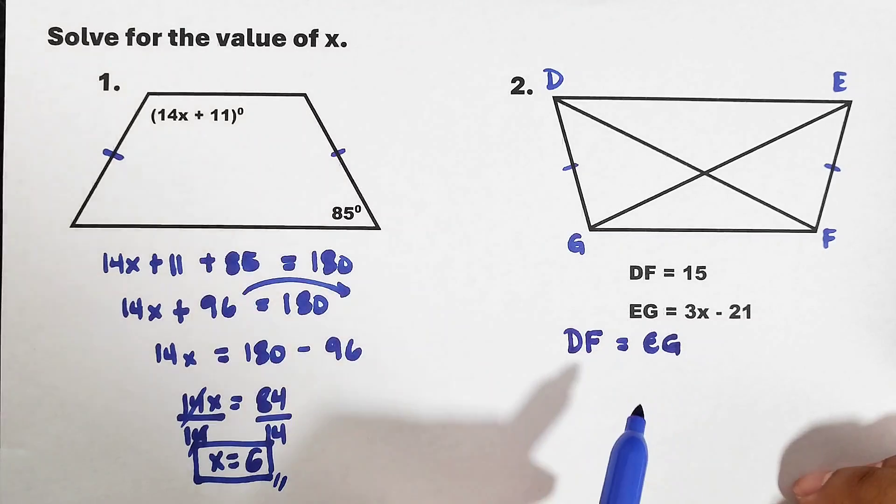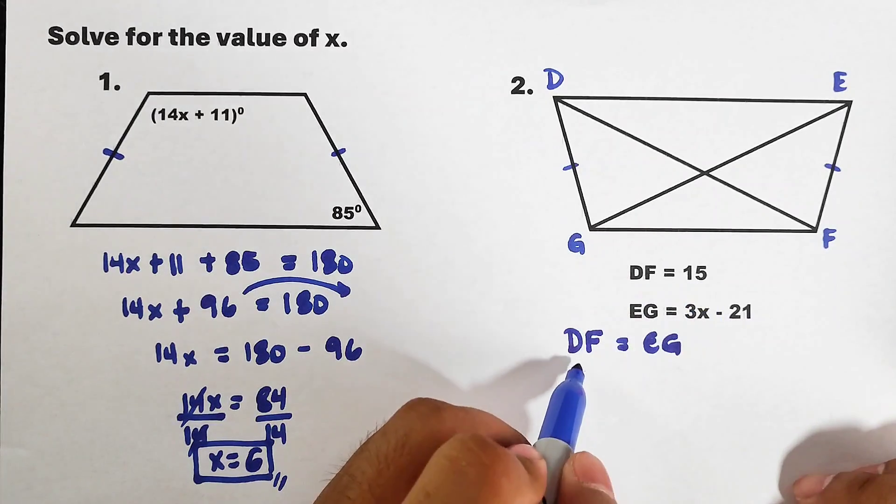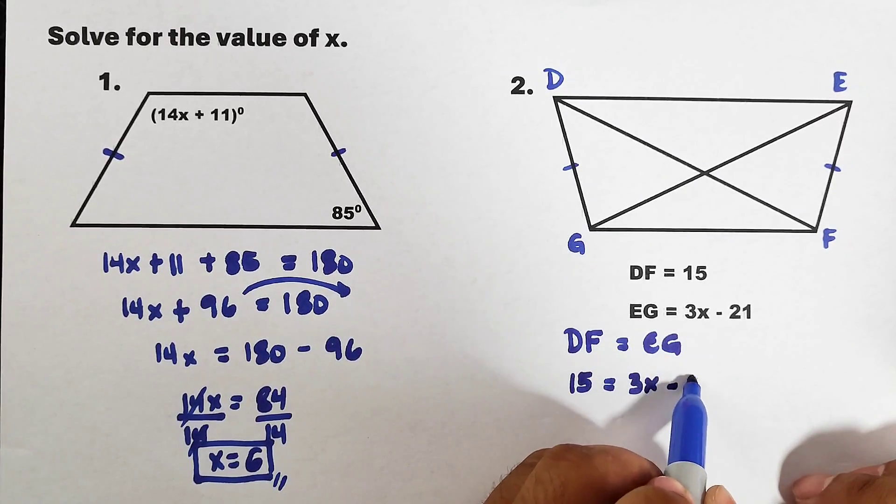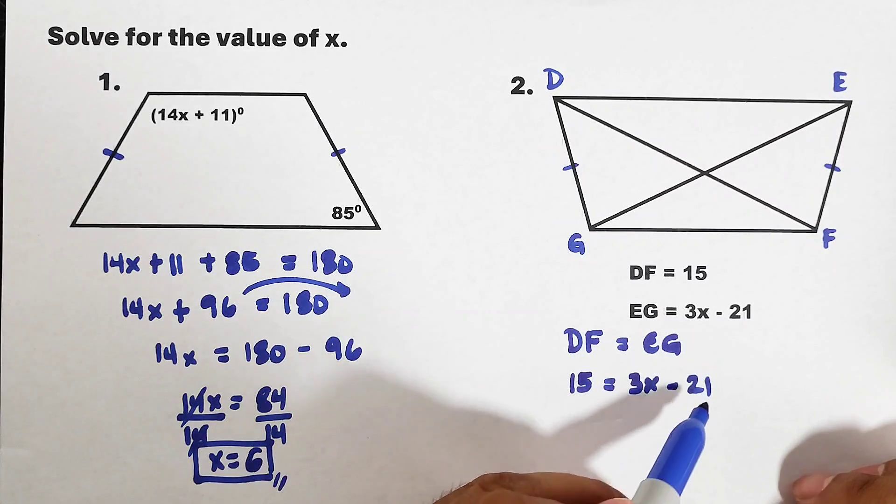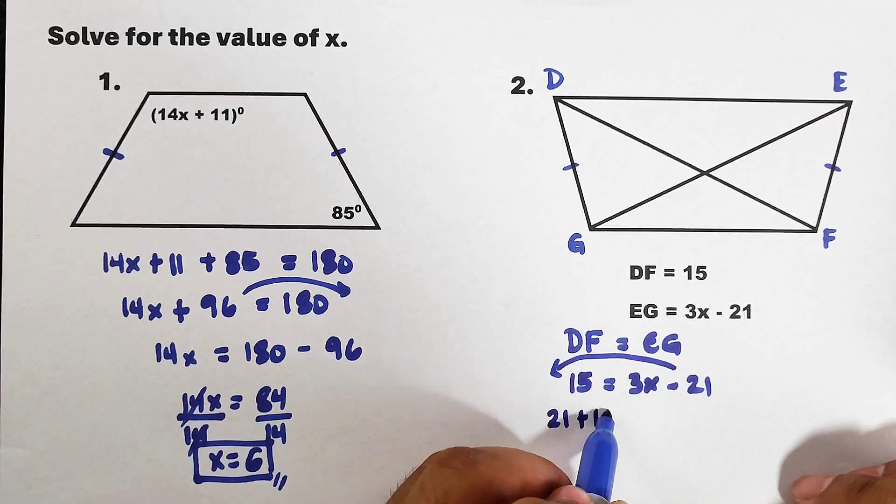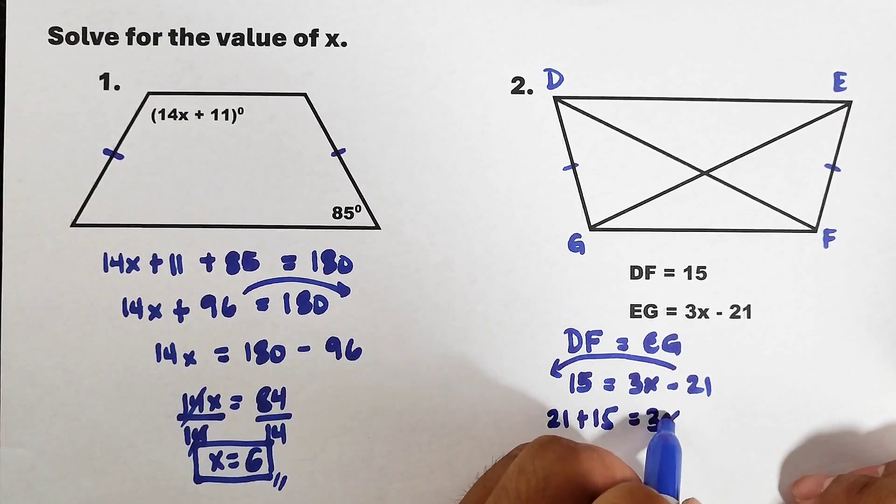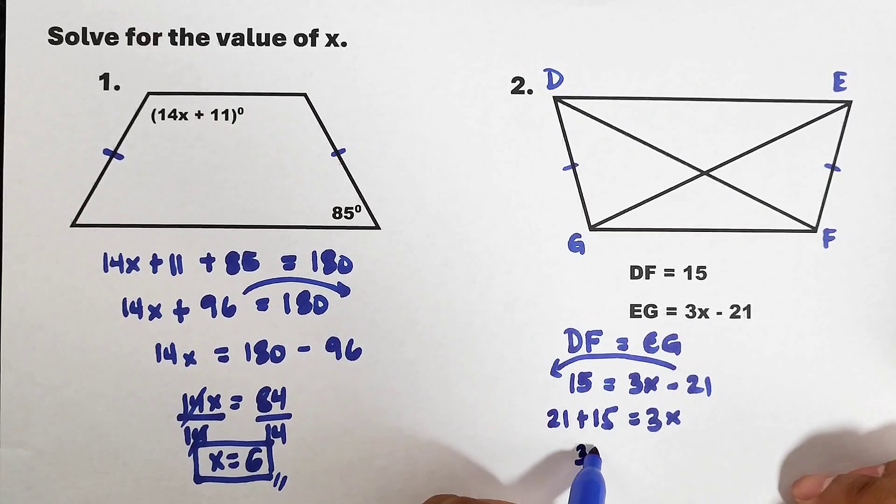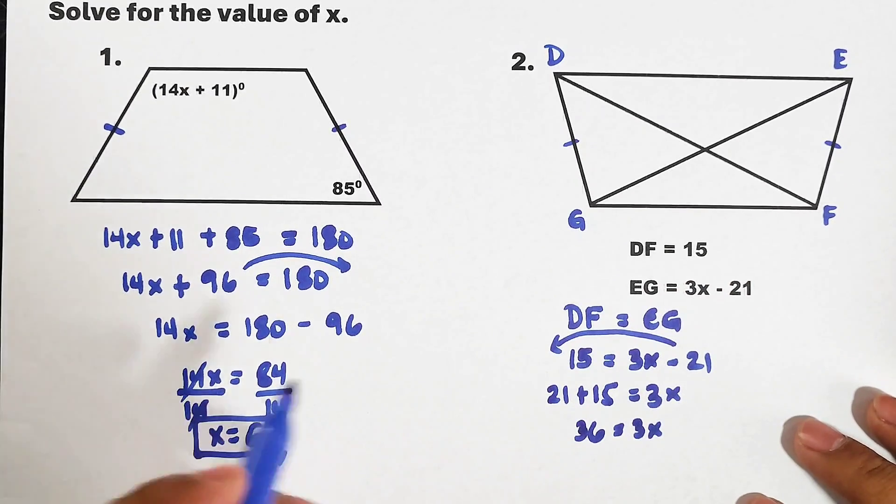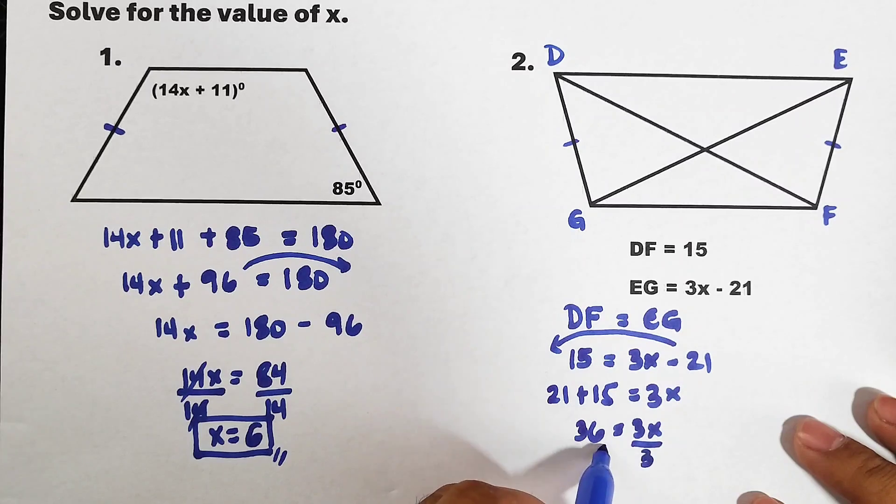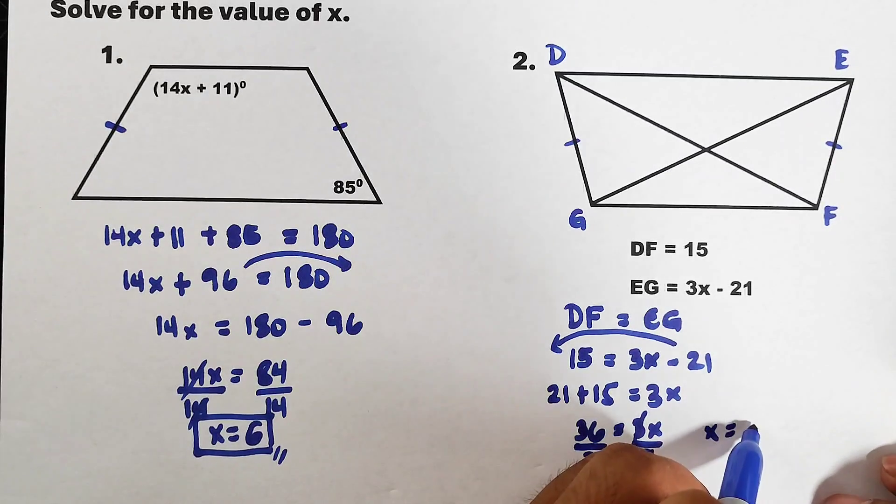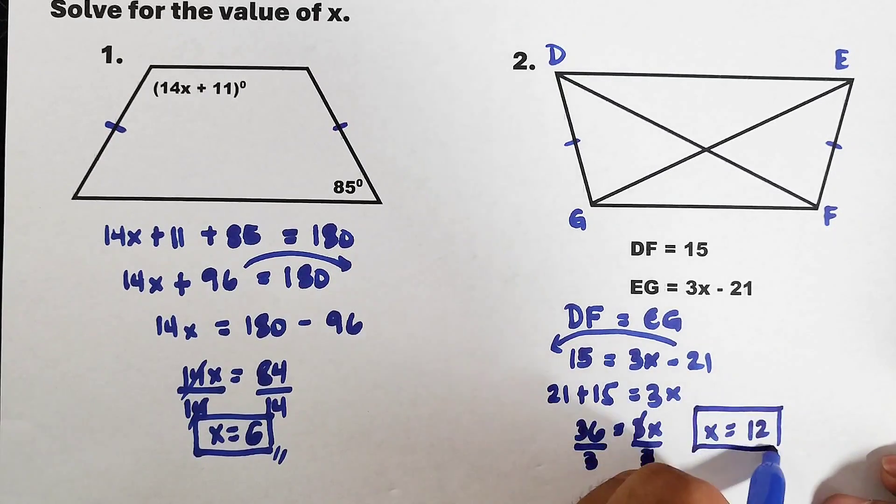This is our working equation. We will substitute 15 for DF, and then for EG we have 3x minus 21. And as we all know, we need to transpose 21 to the other side. That would become 21 plus 15, and this is 3x. Add them: 36 equals 3x. To finally solve for the value of x, divide both sides by 3. Your x equals 36 over 3, which is equal to 12.